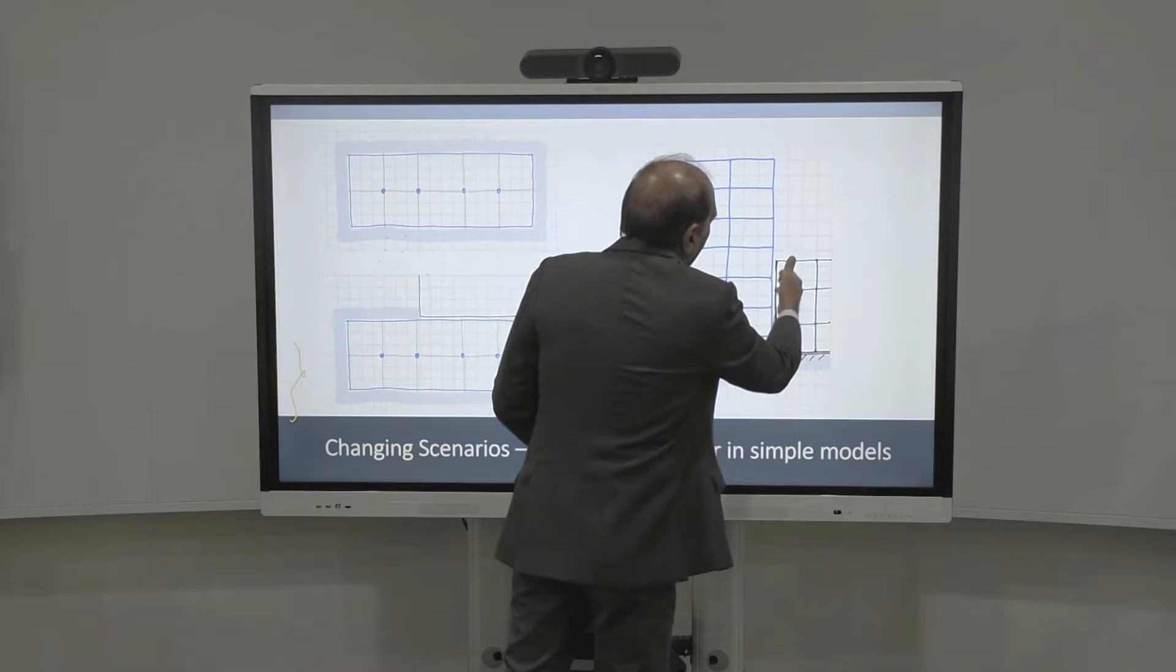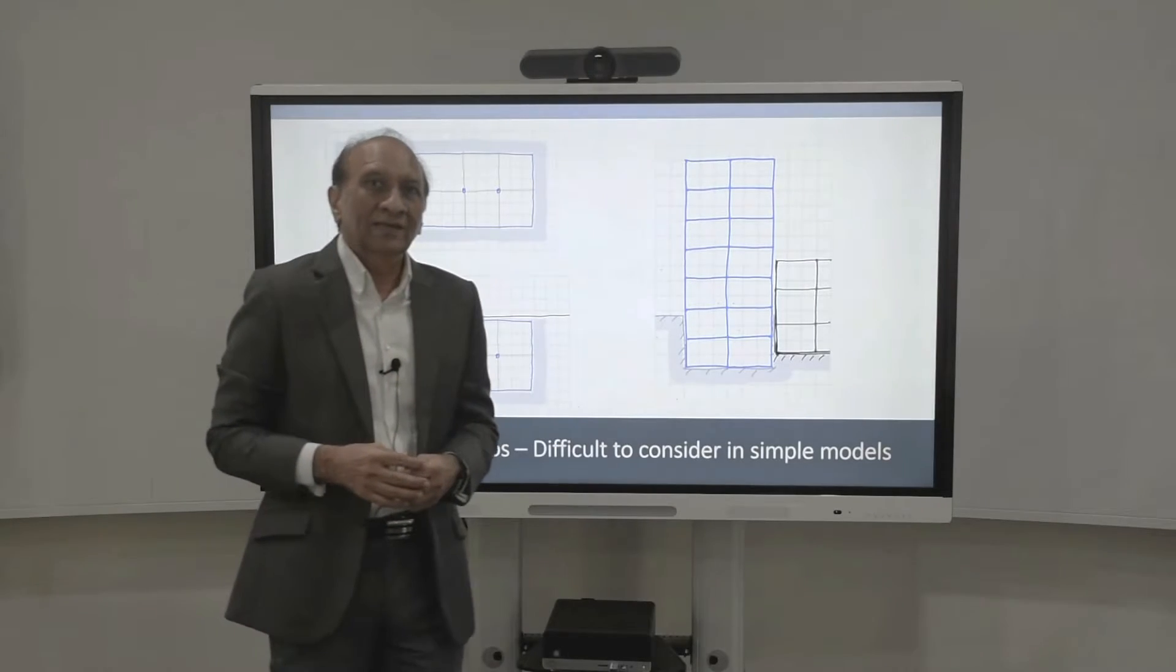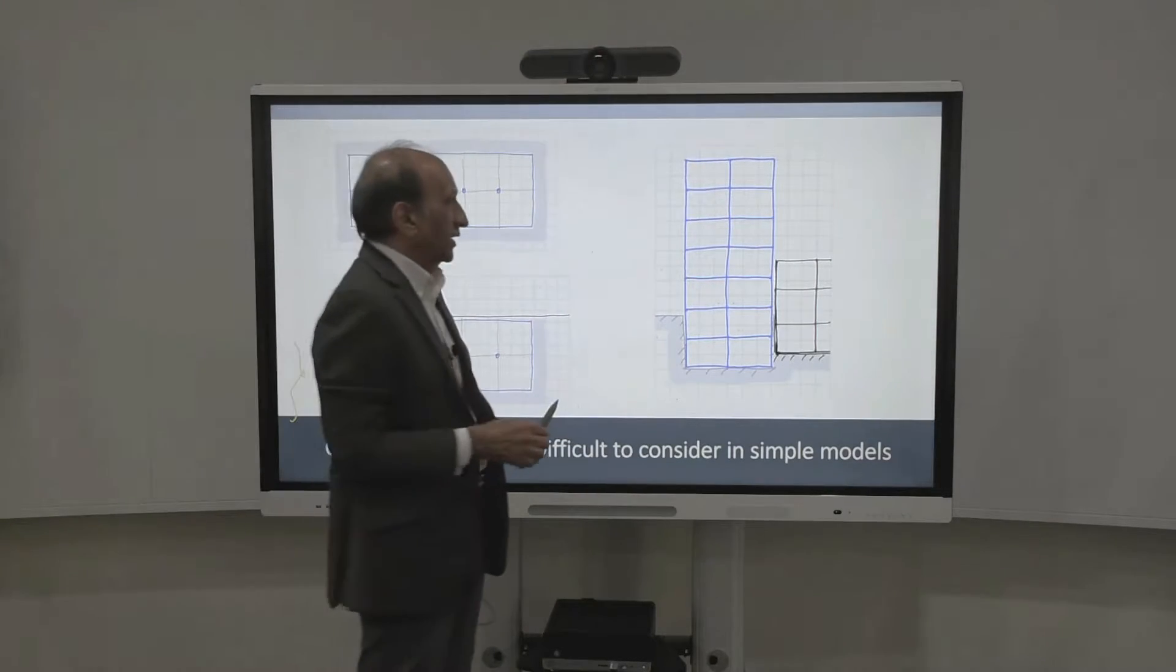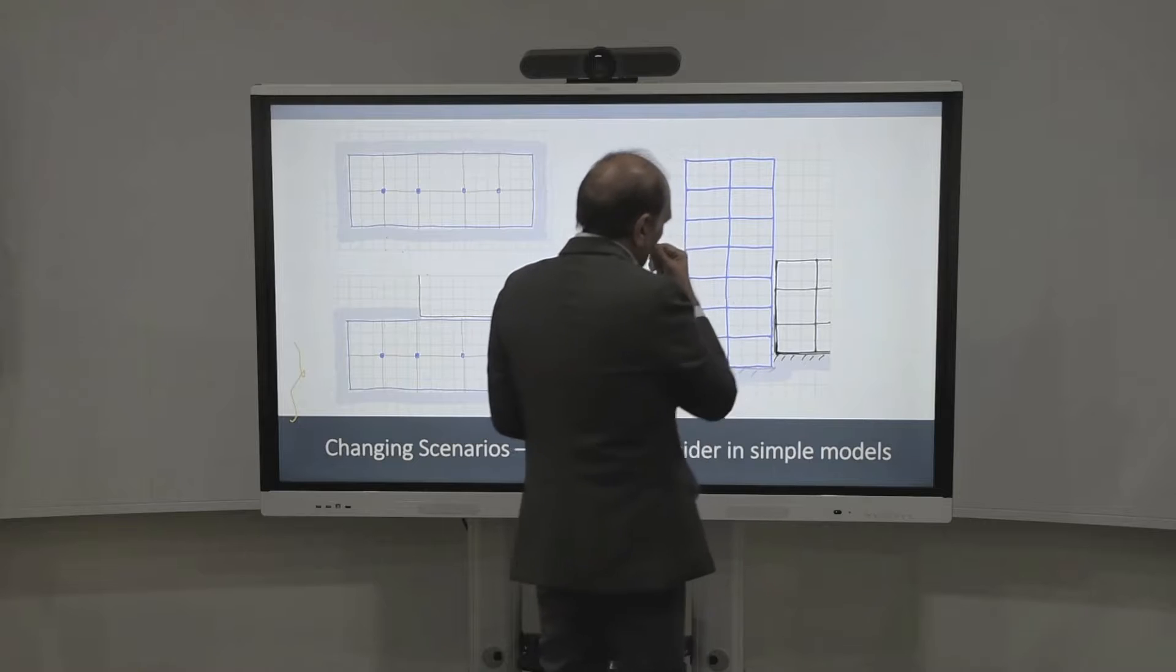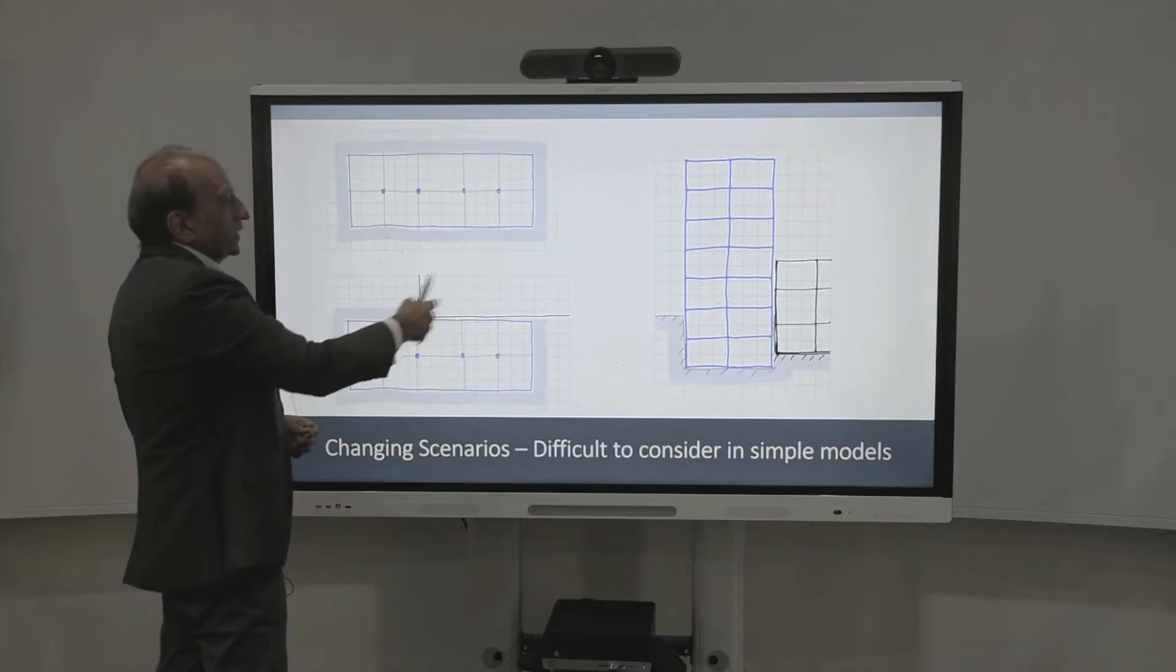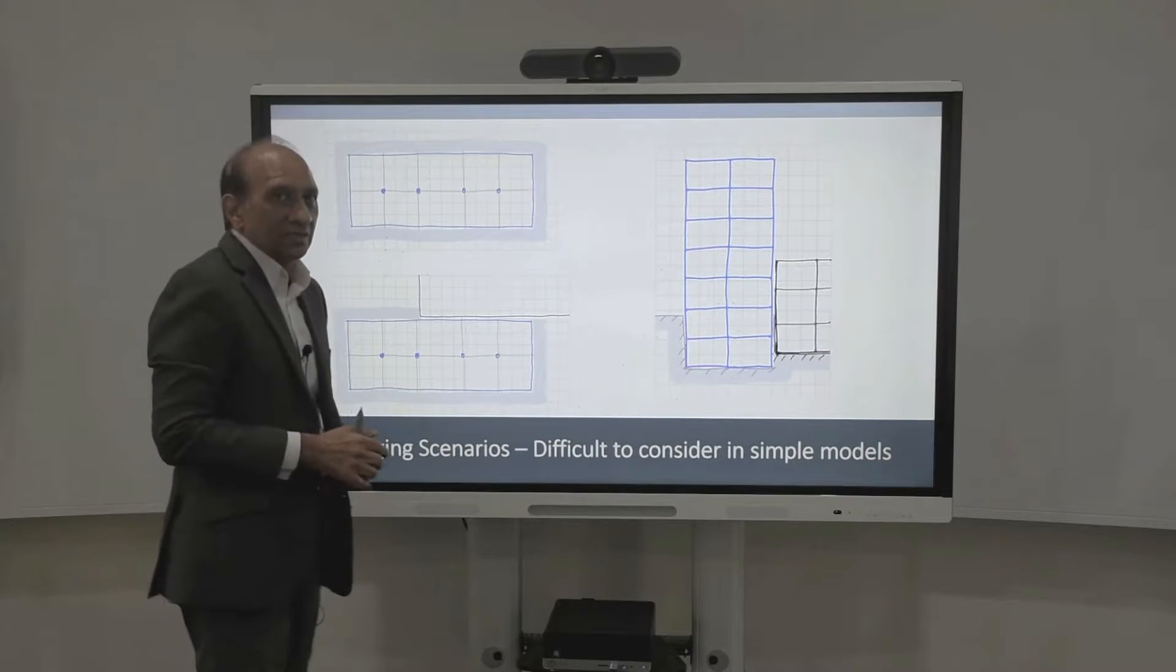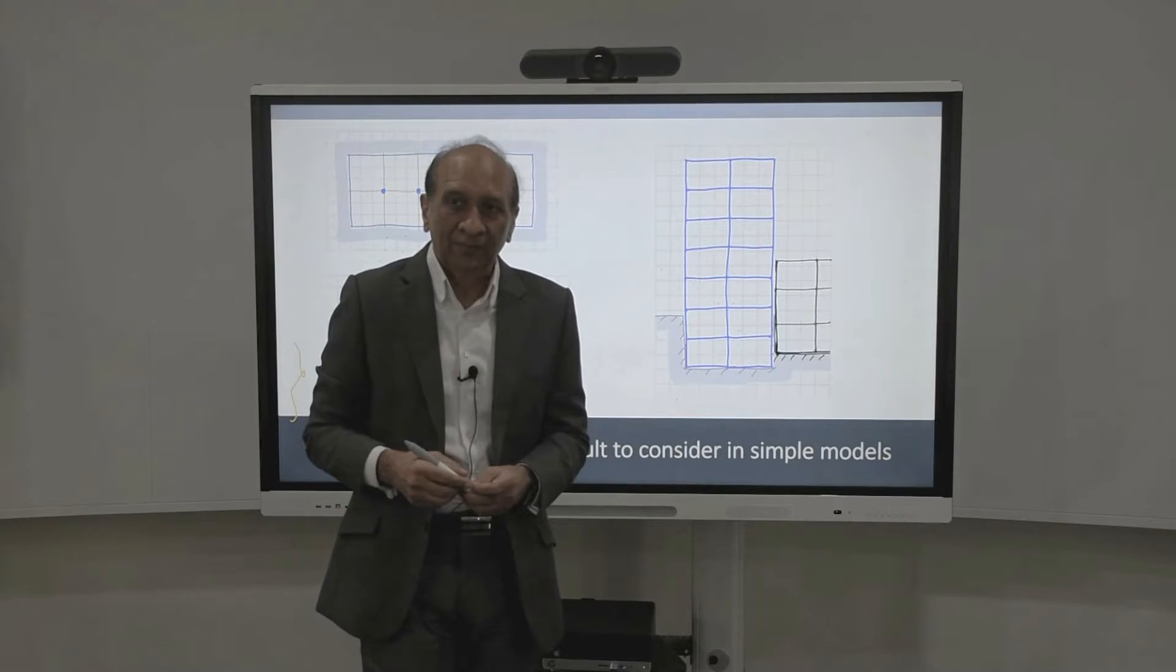And now your building might hit your neighbor. So you have to do impact analysis to make sure that your building doesn't hit your neighbor or the neighbor building doesn't hit you. In many countries, there are rules that you cannot do that. You have to prove by analysis that your construction will not affect the existing buildings. But in many other places, the rules may not be available.